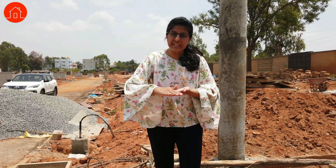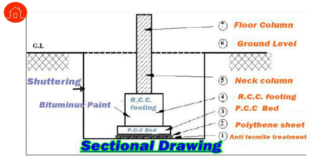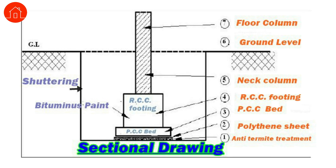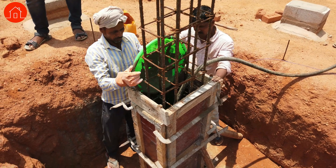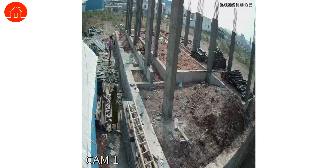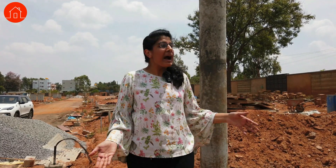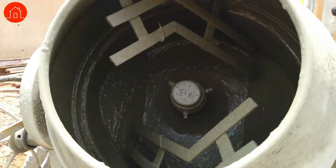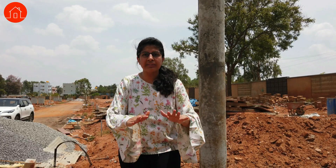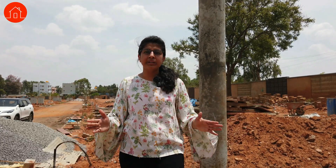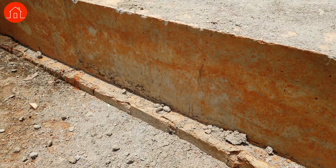This is the basic way any RCC foundation works. You first have the PCC layer, on top of it you have the footing, on top of the footing a column is erected, then earth is filled around it. After that the plinth beam structure is made and concrete is poured again. This completes your basic outer level of built-up area, which is your plinth slab or plinth level.